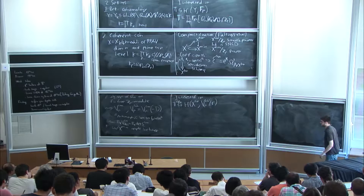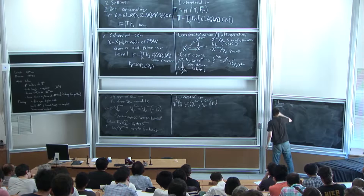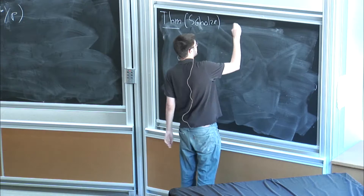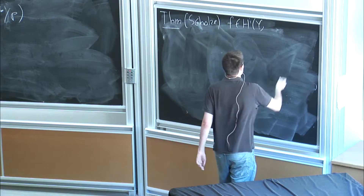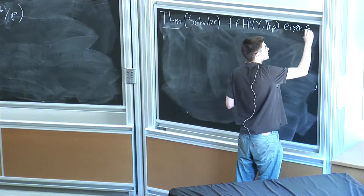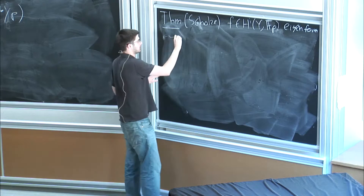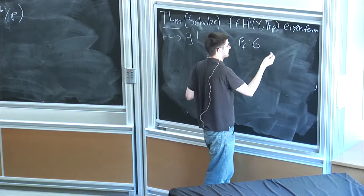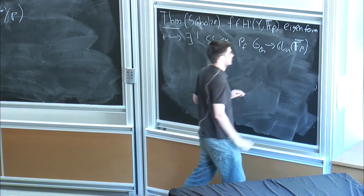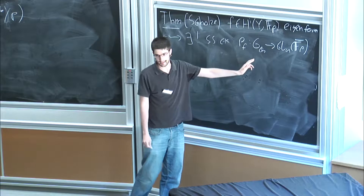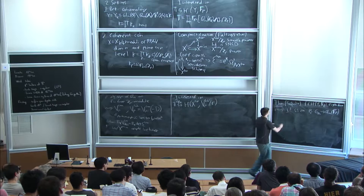Today I'm going to discuss the proof of two theorems. The first is a very famous theorem of Peter Scholze, which I want to explain a different proof of, and that concerns the Betti cohomology case. The theorem says that if you have a mod p eigenform in the F_p-bar cohomology of an arithmetic locally symmetric space, then there's a semi-simple continuous Galois representation ρ_f from the Galois group of Q to GL_n(F_p-bar), associated to f in the usual sense that characteristic polynomials of Frobenii at unramified primes match up with the Hecke eigenvalues. I'll call this Theorem A.